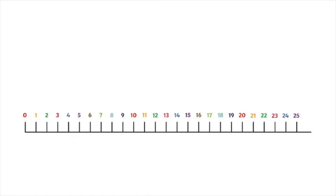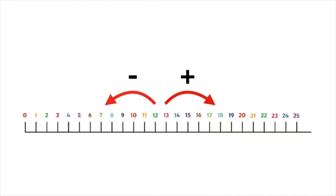Here is a number line. If we were doing addition, we would be counting on — counting forward. But because we are going to be doing subtraction, we will be counting back.